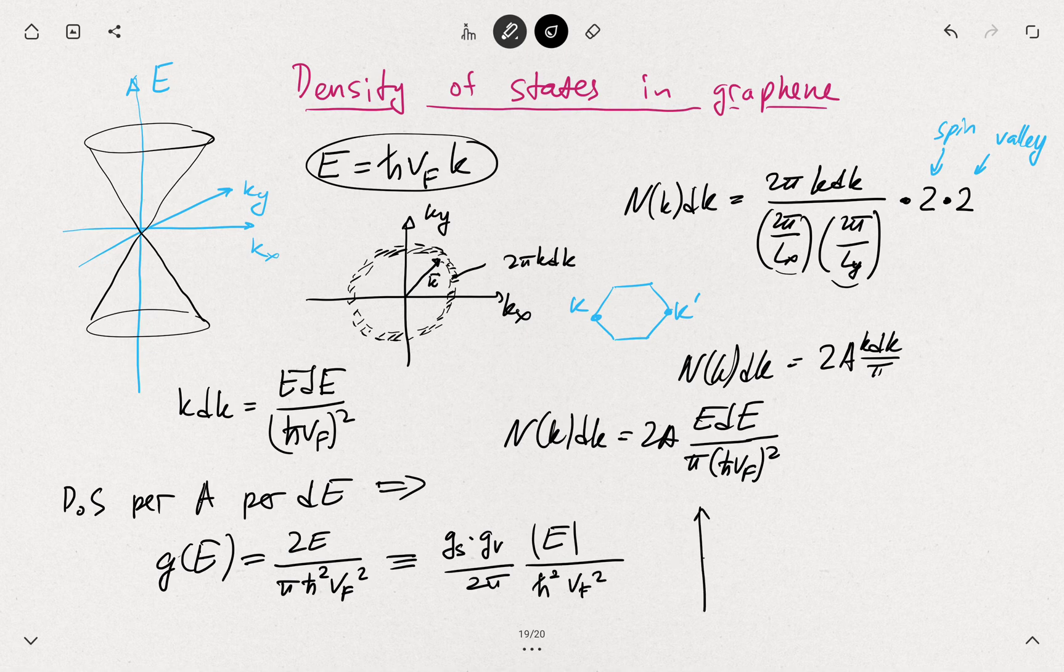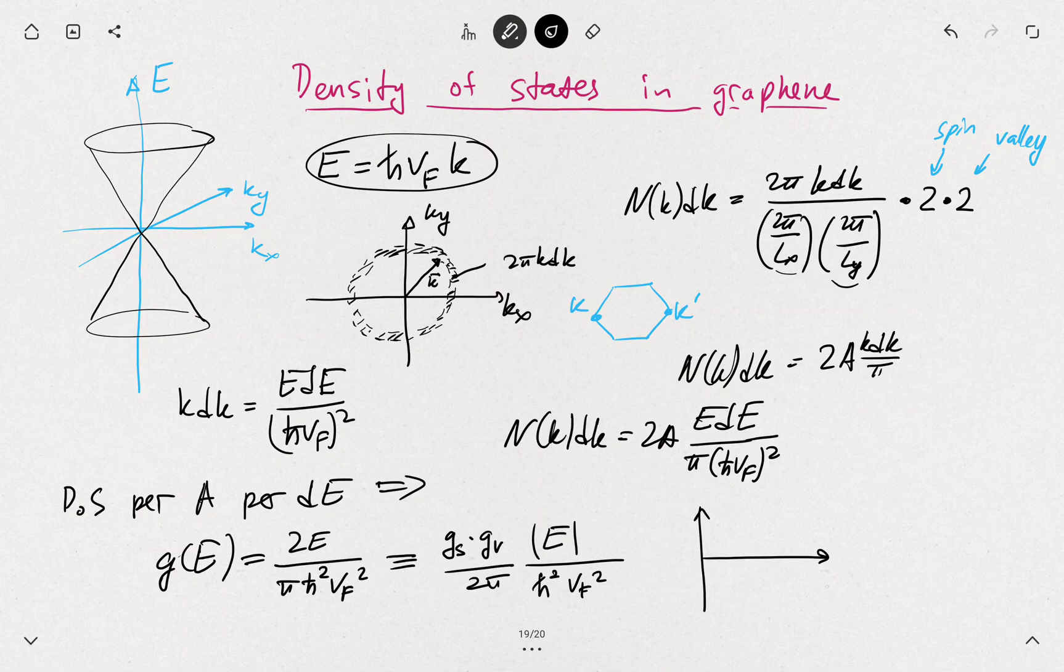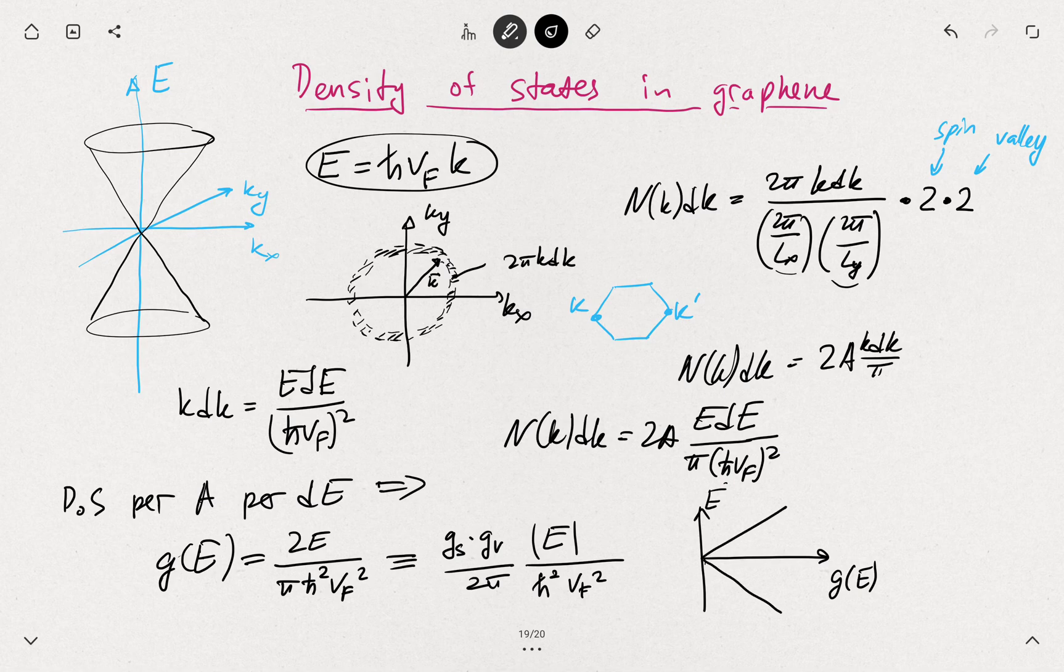And the plot then would look something like that. So we have g of E here, E here. And it's again the linear behavior.